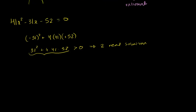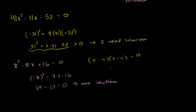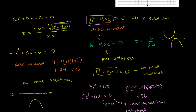One more: x² - 8x + 16 = 0. The discriminant is (-8)² - 4(1)(16) = 64 - 64 = 0. So we only have one solution, and by definition it's rational — negative b over 2a is always rational when a, b, c are rational numbers. You can verify: this factors as (x - 4)² = 0, giving x = 4.